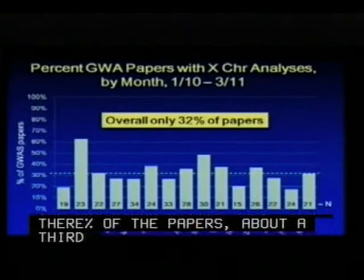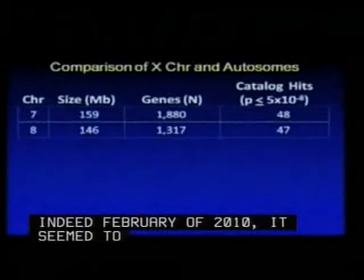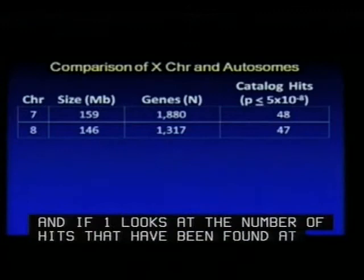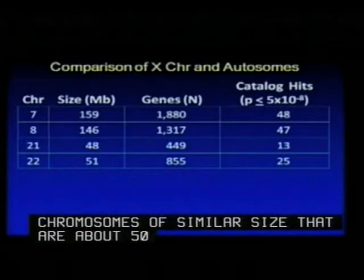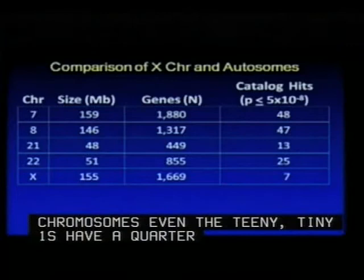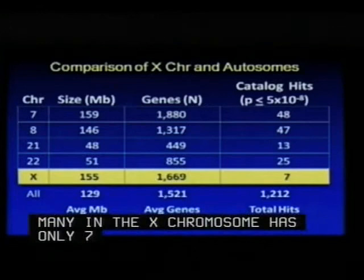That proportion did not change over time — it didn't increase or decrease. We're not quite sure what happened in February of 2010; it seemed to be an outlier. If one looks at the number of hits found at the 5×10⁻⁸ level in the catalog, for chromosomes of similar size there are about 50 hits, but the X chromosome has only 7 of 1,212 total associations at this level. Quite a difference.